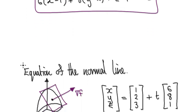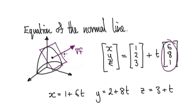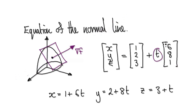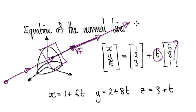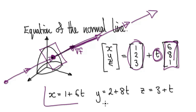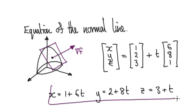Now let's look at the equation of our normal line. We know the gradient vector. To describe the equation of the normal line — we've done this before — you select a point, which in our case is (1, 2, 3), and then add multiples of the gradient vector. So starting from our point, we add t times the gradient vector (6, 8, 1). That describes the normal line, and the parametric equation of this line would be this.